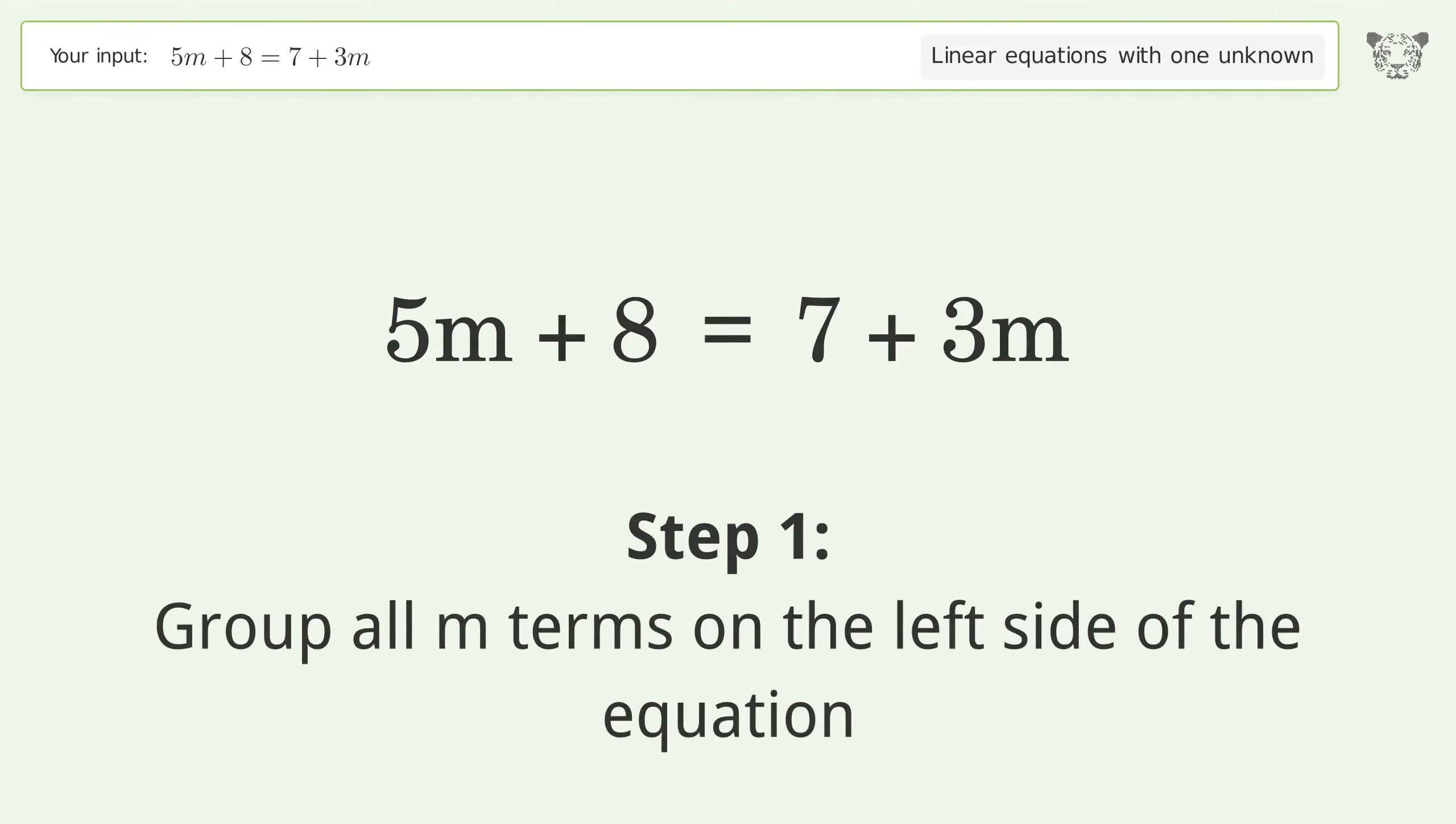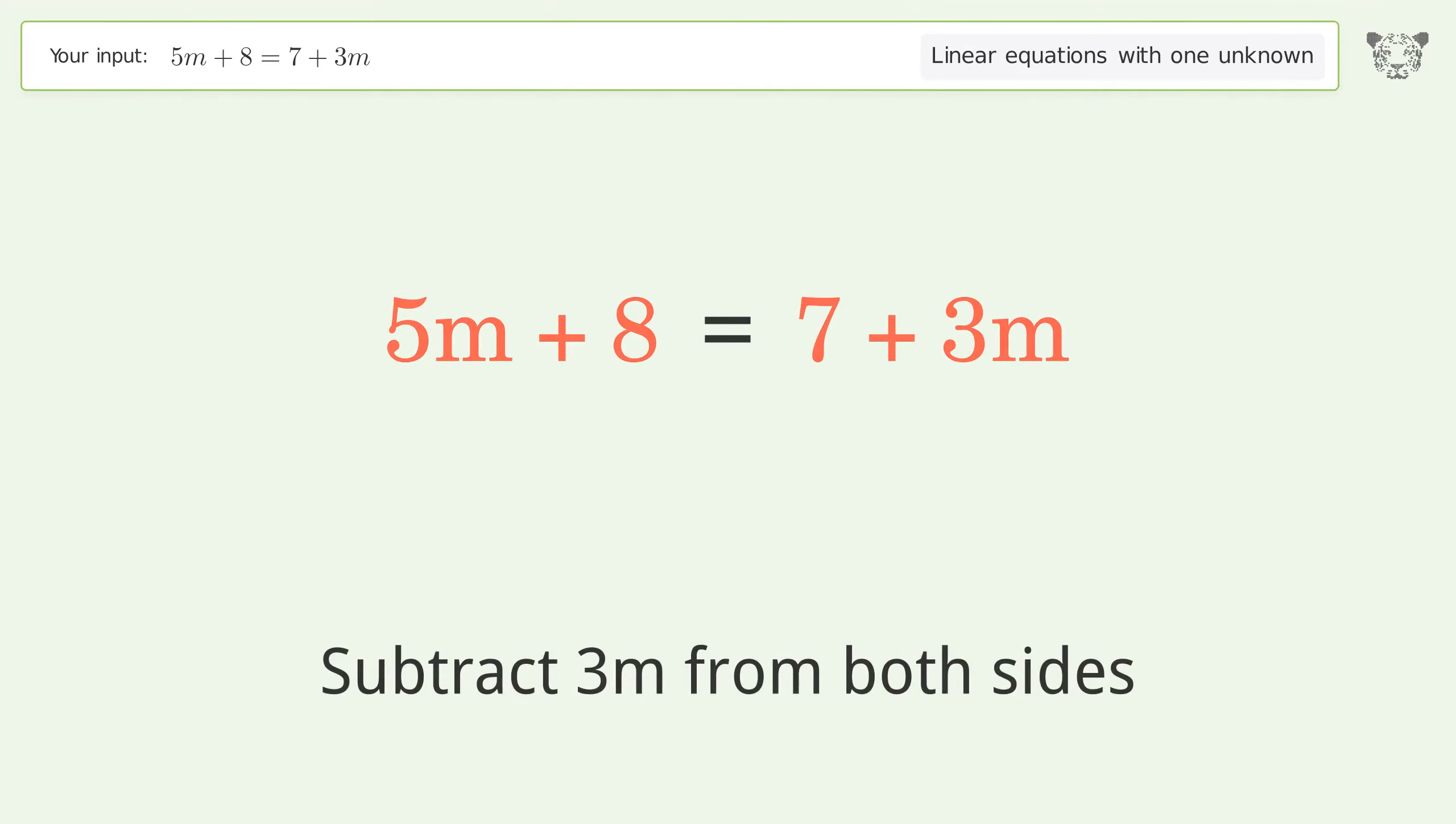Group all m terms on the left side of the equation. Subtract 3m from both sides.